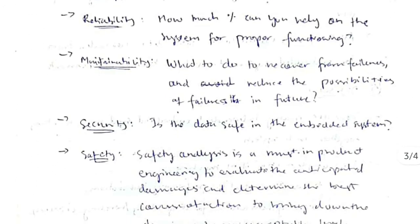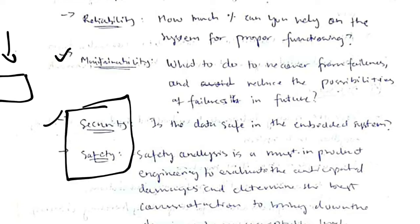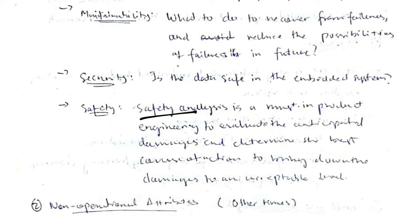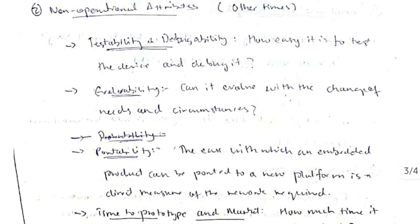The fourth operational attribute is maintainability — what measures are taken to recover from a failure. Fifth and sixth are security and safety: how safe the data is in the embedded system, how much safety analysis has been carried out, how well you can anticipate probable damages, and how well you can apply strategies to recover from them.